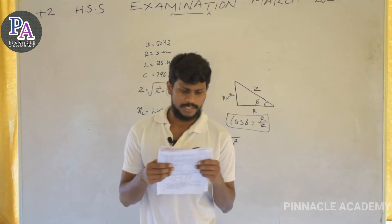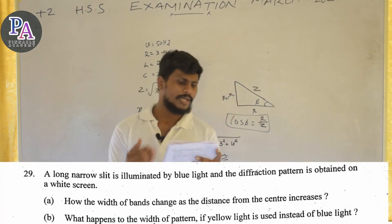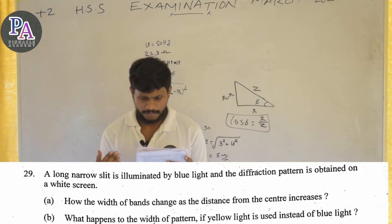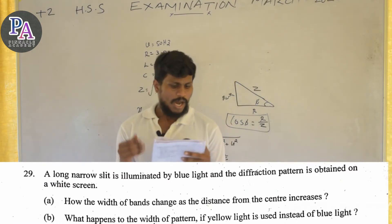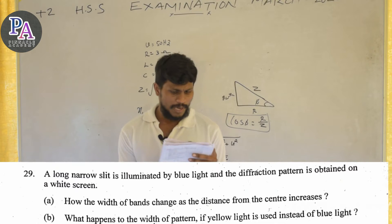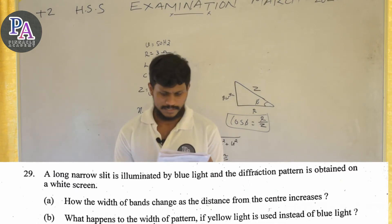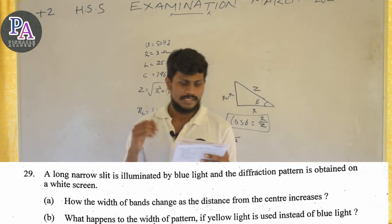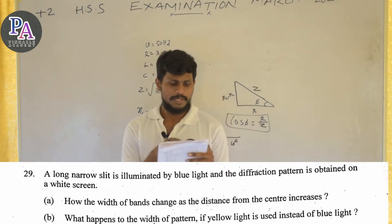In the single slit experiment, a long narrow slit is illuminated by a blue light and a diffraction pattern is obtained on a white screen. How does the width of the band change as the distance from the center is increased? The distance changes according to each band.